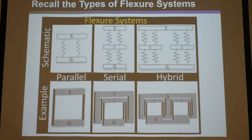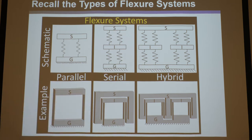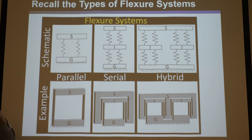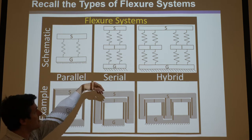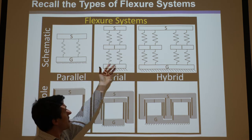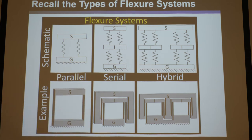You'll recall that there are three kinds of flexure systems: parallel, serial, and hybrid. Parallel systems consist of two rigid bodies joined directly to each other by flexible elements. Serial ones are parallel modules or systems stacked or nested in series. Hybrid is some combination of those two, or really any configuration that's not purely parallel or serial.